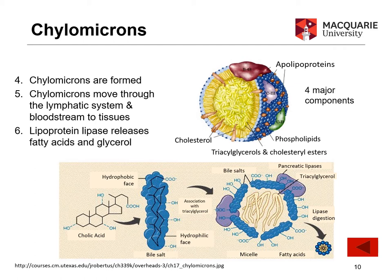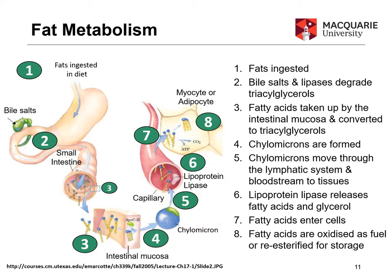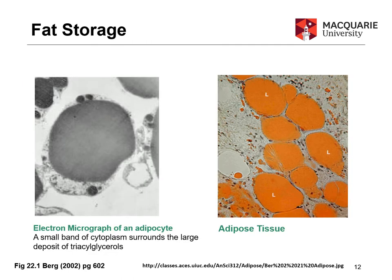So we've made chylomicrons, started transporting them, and enzymes help unpack them to deliver fatty acids and glycerol to places that need energy. At this point, fatty acids entering a cell are either broken down via beta-oxidation, which we'll look at shortly, or stored by repackaging them back into triacylglycerides.